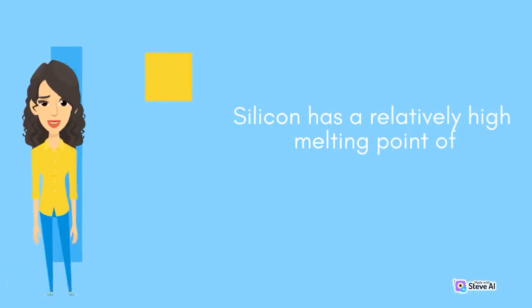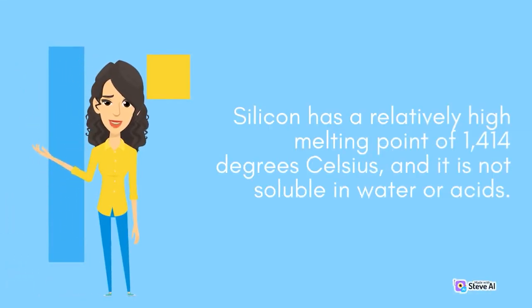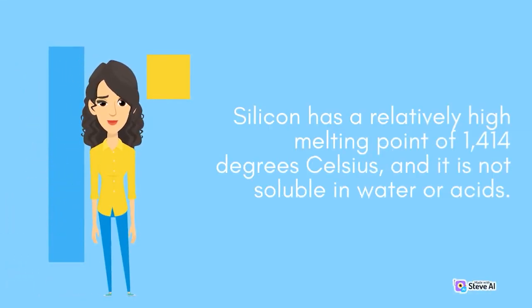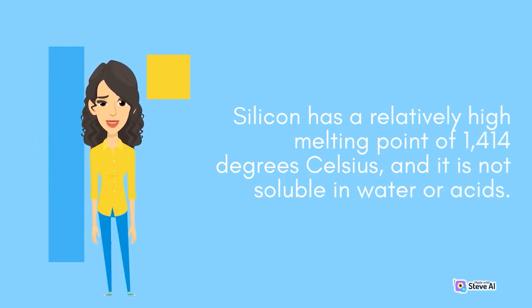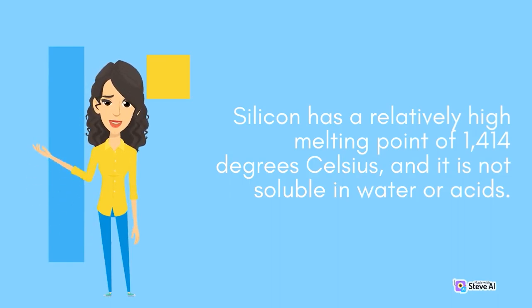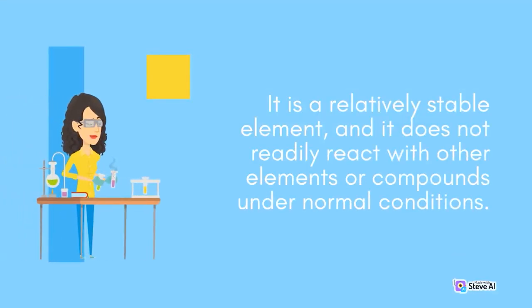Silicon has a relatively high melting point of 1414 degrees Celsius, and it is not soluble in water or acids. It is a relatively stable element, and it does not readily react with other elements or compounds under normal conditions.